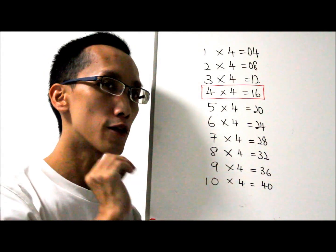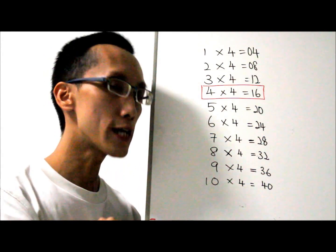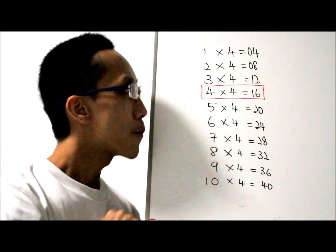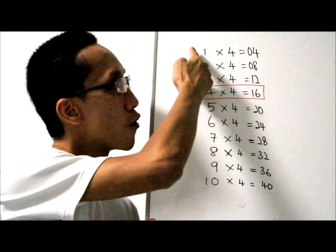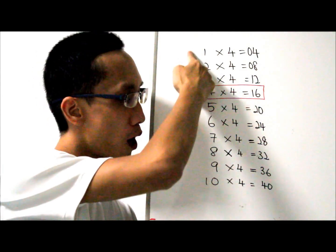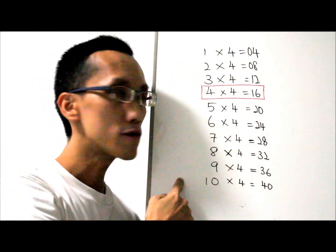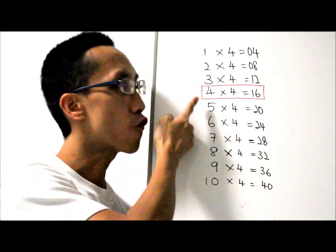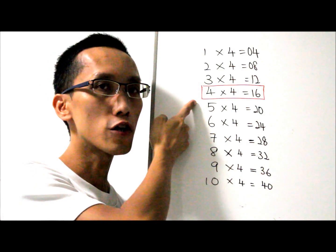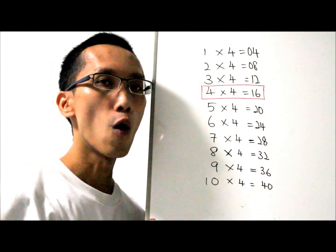For the 4 times table, it's a bit different from the rest of the times tables, because you don't have to learn from the number 1 all the way to 10. You just need to know 4 times 4 equals 16. That's all.